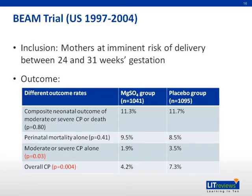The BEAM trial — Beneficial Effects of Antenatal Magnesium Sulfate — was conducted at 20 centers in the United States from 1997 to 2004. The study randomized women at imminent risk of delivery between 24 and 31 weeks gestation, and allowed retreatment if the patient did not deliver after 12 hours. A total of 2,241 women were randomized and their neonates were followed up and assessed at two years of age. The primary outcome was a composite of moderate to severe CP or death. There was no difference in the primary outcomes between those exposed to magnesium sulfate versus placebo, and also no difference in the risk of perinatal mortality.